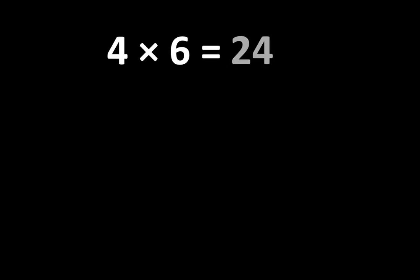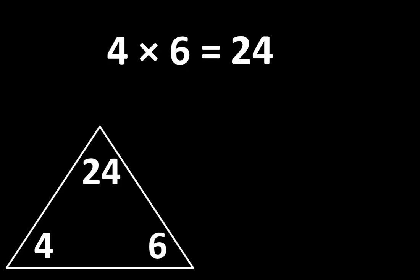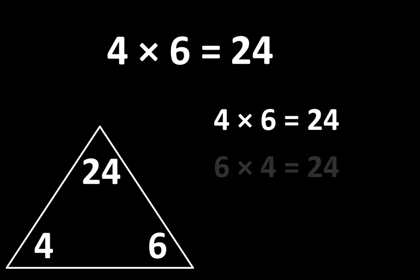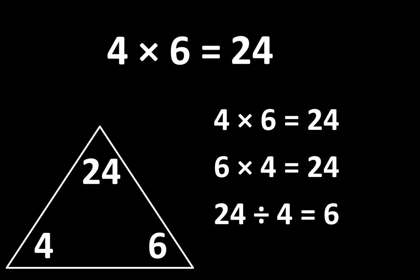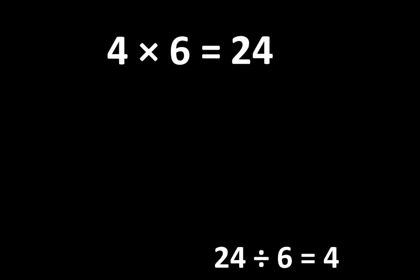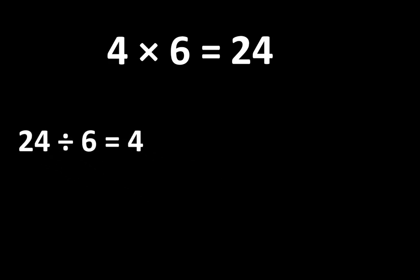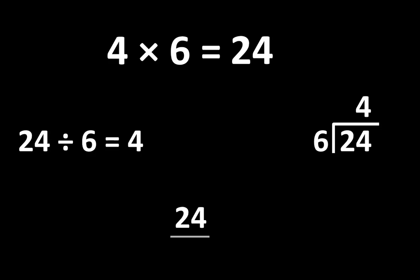4 times 6 is equal to 24. Let's examine some ways that 4, 6, and 24 are related to each other. If 4 times 6 is equal to 24, then 6 times 4 is also equal to 24. And since multiplication is related to division, we also know that 24 divided by 4 is equal to 6, and 24 divided by 6 is equal to 4. There are several different ways to write this idea, and that can be very useful.